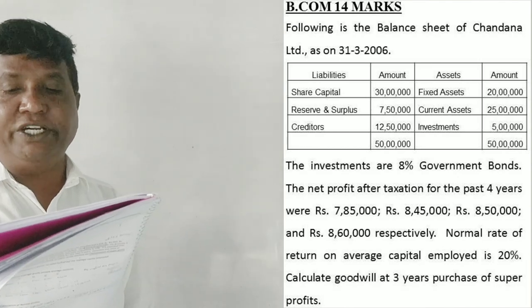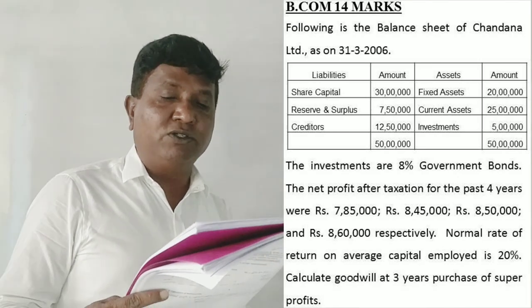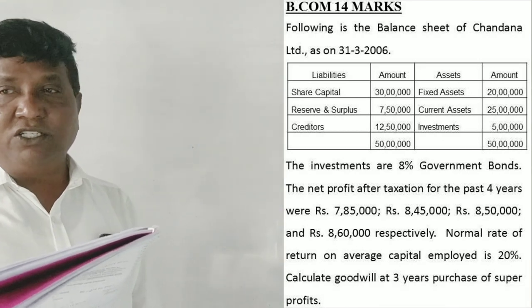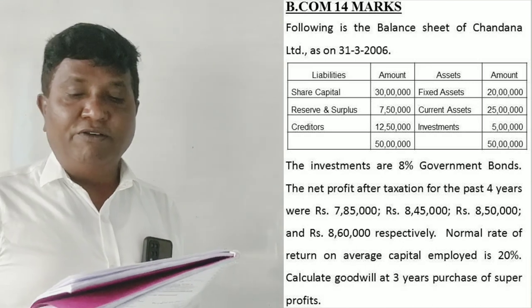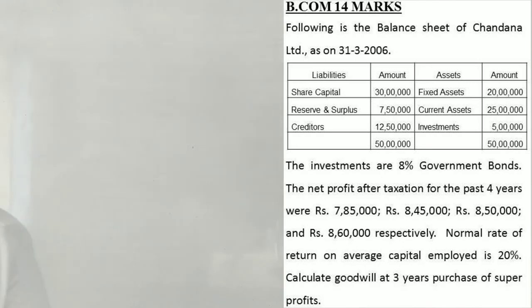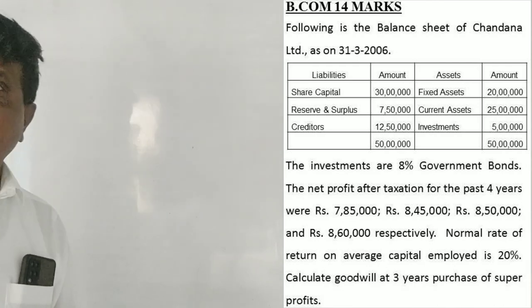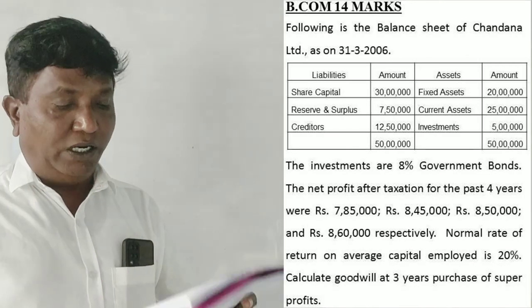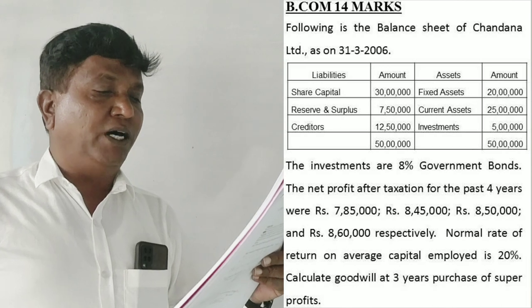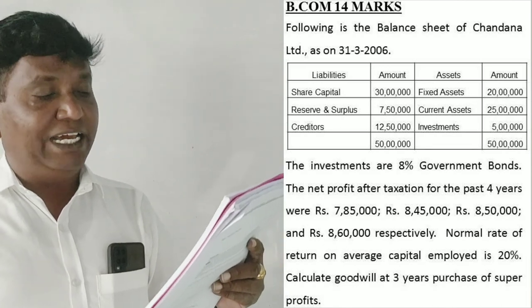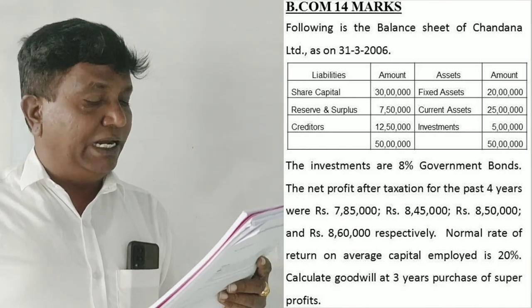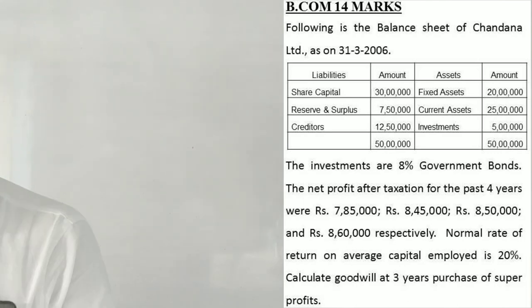Following is the balance sheet of Chandana Limited as on 31st March 2006. Share capital 30 lakhs, reserves and surplus 7 lakhs 50,000, creditors 12 lakhs 50,000. Fixed assets 20 lakhs, current assets 25 lakhs, investment 5 lakhs. Total assets is 50 lakhs. The investments are 8% government bonds. The net profit after taxation for the past 4 years were 7 lakh 85,000, 8 lakh 45,000, 8 lakh 50,000, 8 lakh 60,000. Normal rate of return on capital employed is 20%. Calculate goodwill at 3 years purchase of super profit.